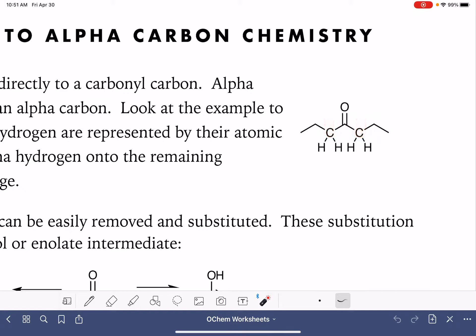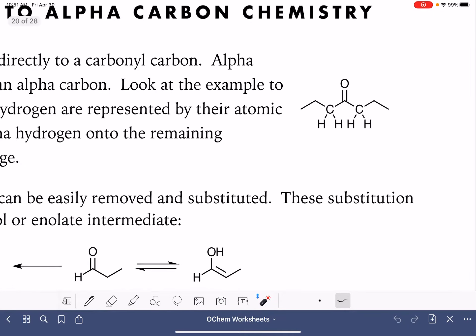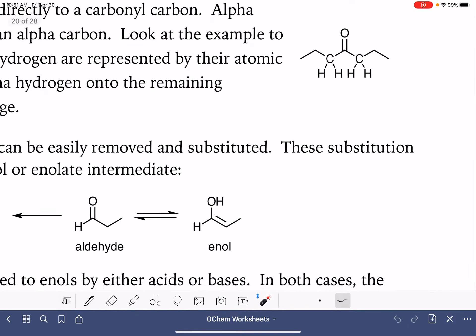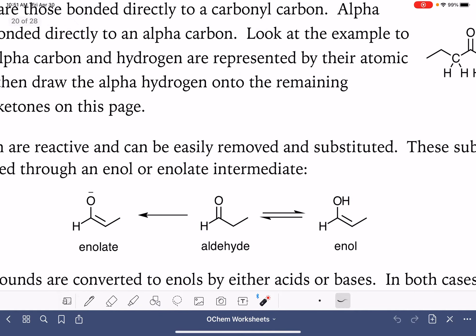Alpha hydrogens are hydrogens that are attached directly to alpha carbons. So this particular molecule here has two alpha carbons and it has a total of four alpha hydrogens. The first thing we're going to do is go through the different molecules on this worksheet and just practice finding alpha carbons and alpha hydrogens.